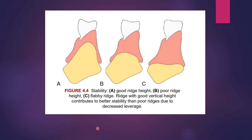Stability decreases with the loss of vertical height of the ridges. Picture A shows good ridge height, picture B shows poor ridge height, and C is a flabby ridge. The ridge with good vertical height contributes to better stability than poor ridges due to decreased leverage.